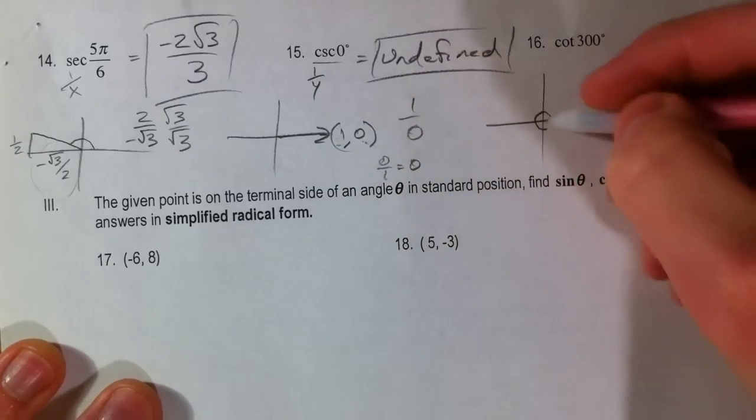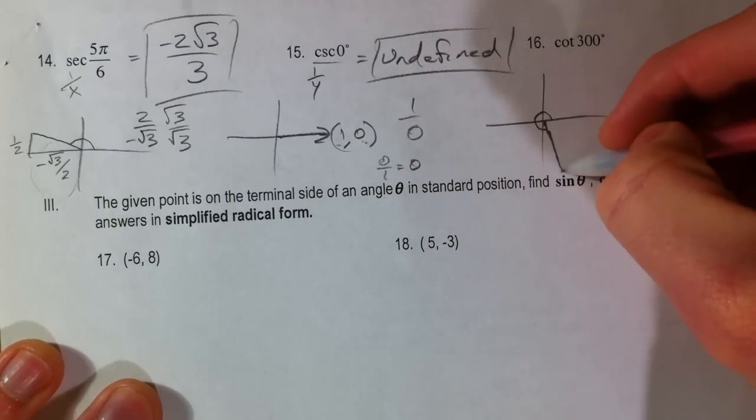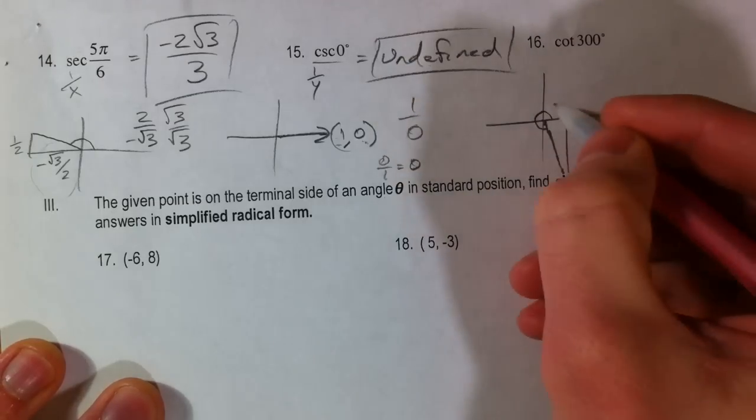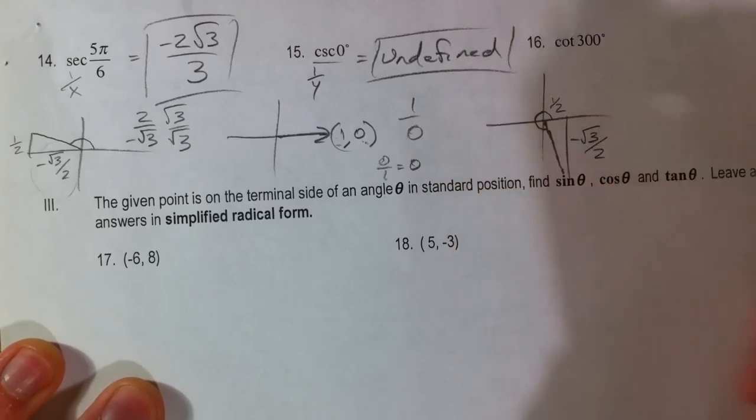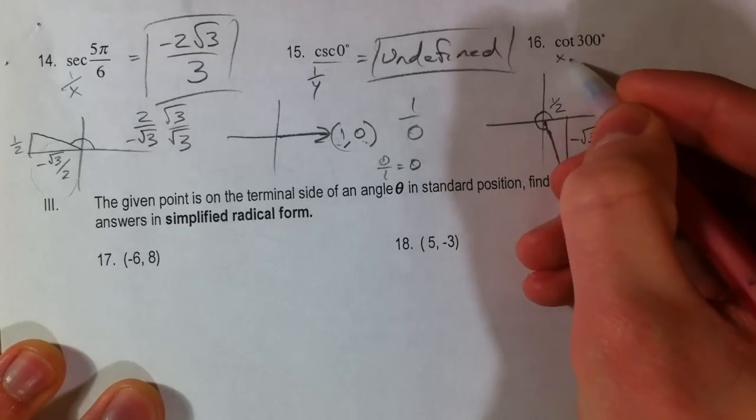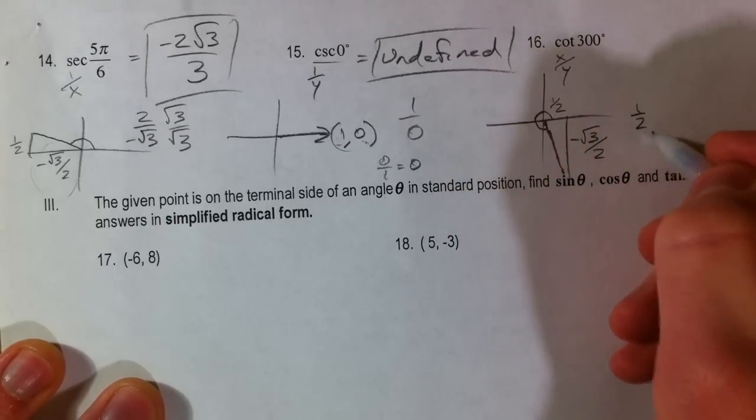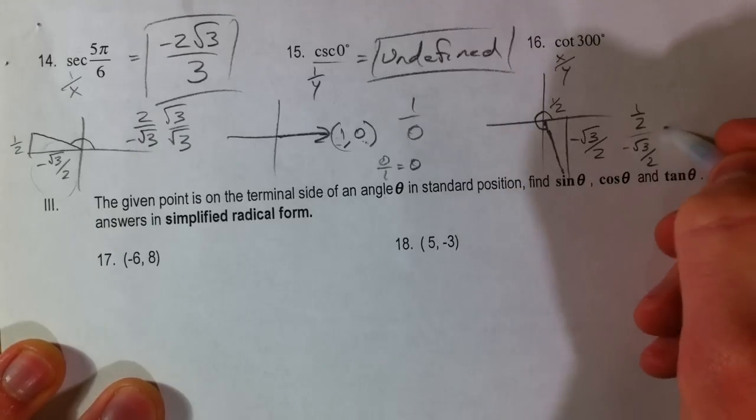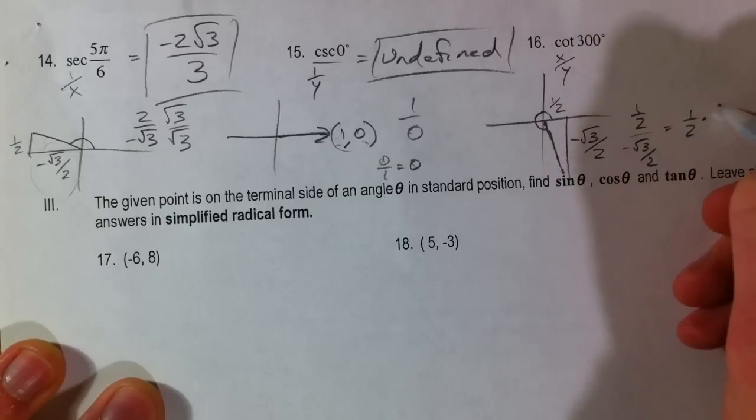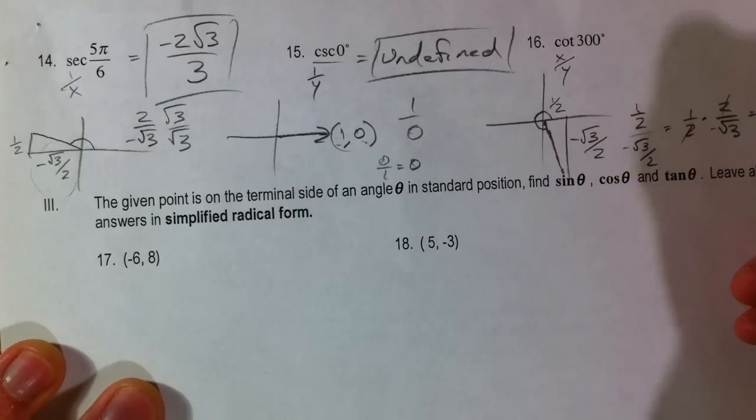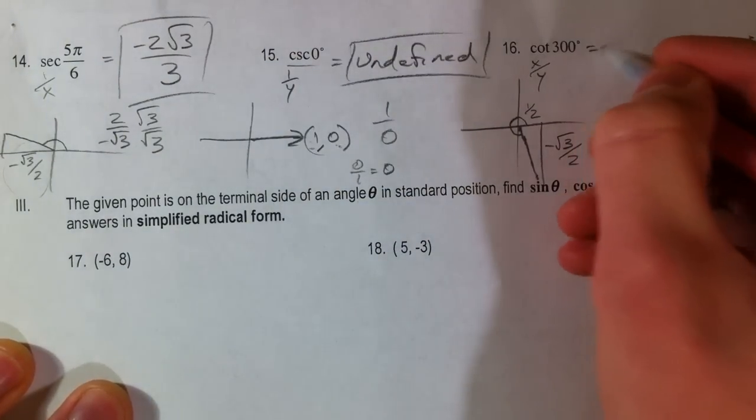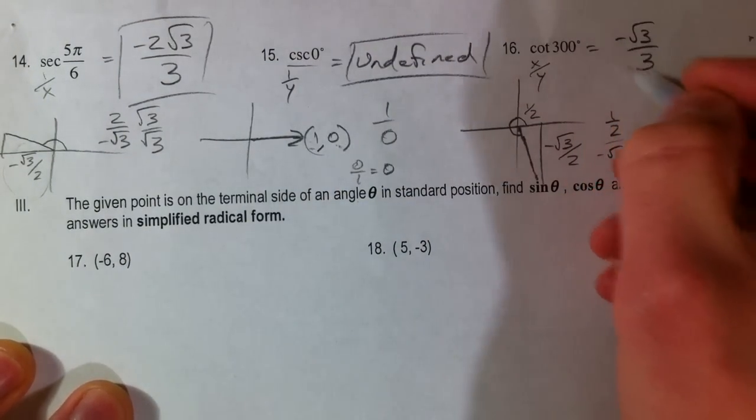Cotangent 300 all the way around. And we're 30 degrees past 270. So we've got 1 half as the short side, root 3 over 2 as the long side. Cotangent is x over y. 1 half over root 3 over 2. So we multiply 1 half times 2 over negative root 3. 2's cancel out. Negative 1 over root 3. And then we rationalize. Negative root 3 over 3.